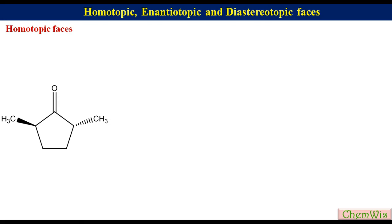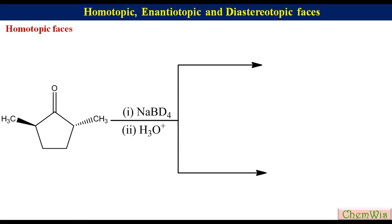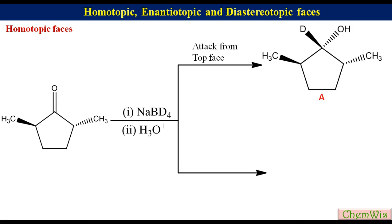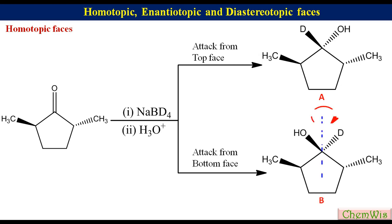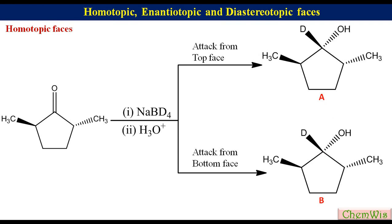Let's take the example of trans-2,5-dimethylcyclopentanone, with NaBD4 as the reagent of choice. Attack of NaBD4 from the top face gives structure A, while attack from the bottom face gives structure B. If we rotate structure B 180 degrees about this axis, we find that structures A and B are the same. So the two faces of the carbonyl in trans-2,5-dimethylcyclopentanone are homotopic.